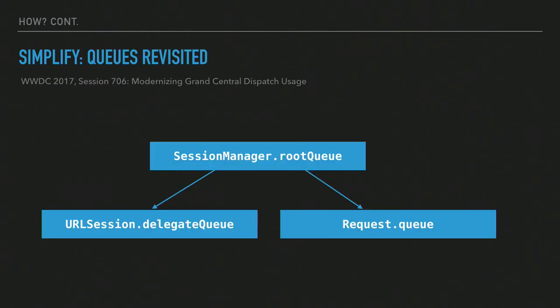One thing we had to rethink was how we used queues. At WWDC 2017 there was a great session called 'Modernizing Grand Central Dispatch Usage' — a brilliant session that seemed almost targeted at Alamofire. Instead of creating a separate queue for every request, now the session manager has a root queue as the basis for everything else. The URL session's delegate queue is set to this queue, and the request queue for each request is also set to this queue. In its simplest mode there's only one queue no matter how many requests you enqueue — instead of 10,000 queues for 10,000 requests, they all point to the same queue, which is much less resource-intensive.